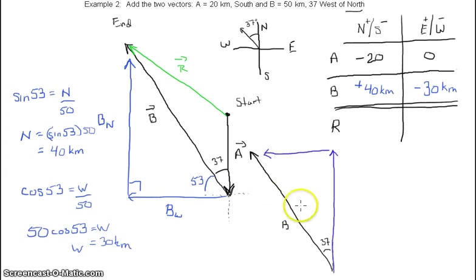I just redrew vector B outside of this picture. Sometimes the picture can get crowded, so if you want you can redraw it outside, makes life a little bit easier. There's your right angle. This would be the component of B going north, this would be the component of B going west, and the only difference is 37 degrees.